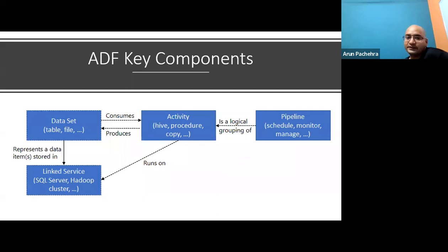Then we have linked service. Linked services, as the name says, are much like connection strings, which define the connection information that's needed for data factory to connect to external resources. Think of it this way: a linked service defines the connection to the data source and the data set represents the structure of the data. For example, an Azure storage linked service specifies a connection string to connect to the Azure storage account. Additionally, an Azure blob data set specifies the blob container and the folder that contains the data. Now it makes all sense, right?